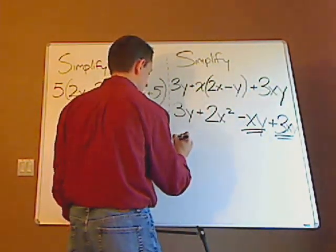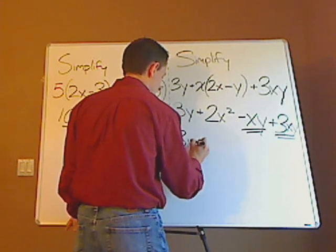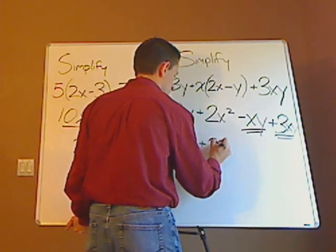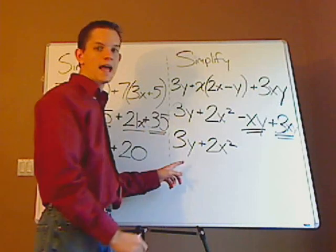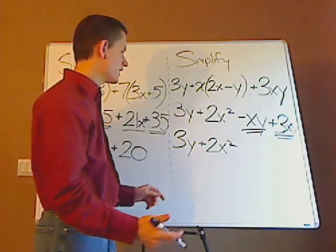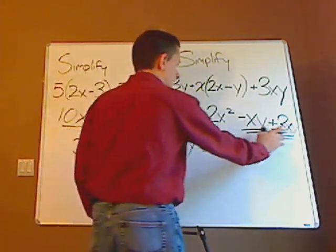So these stay the same. So that's 3y plus 2x squared. I cannot add these two guys together, again, because they're unlike terms, but I can do that here.